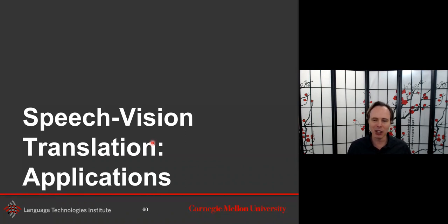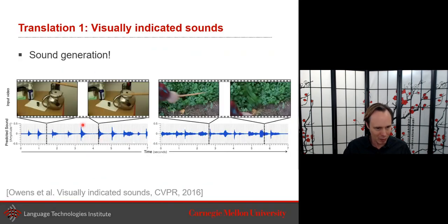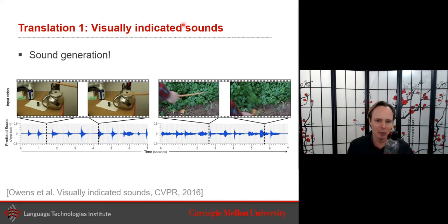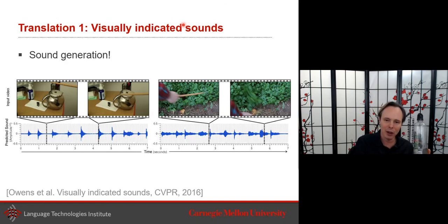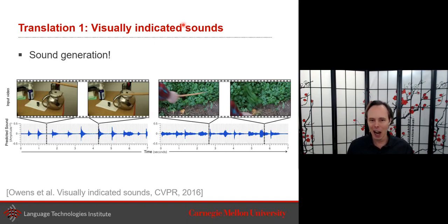For the last few slides — almost for entertainment — there's an interesting paper about going beyond typical translation. The idea: take an object and hit it, always with the same force, and the sound will be different depending on the object. Can you detect the object just from how it sounds? That was a really interesting application of multimodal translation.